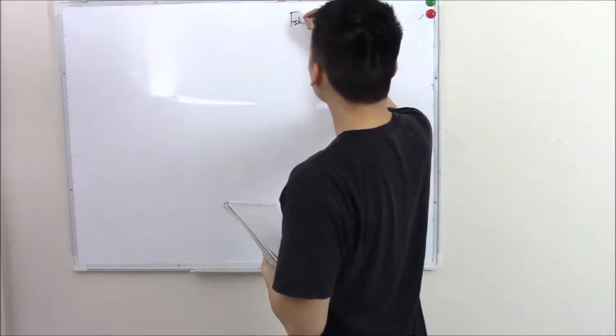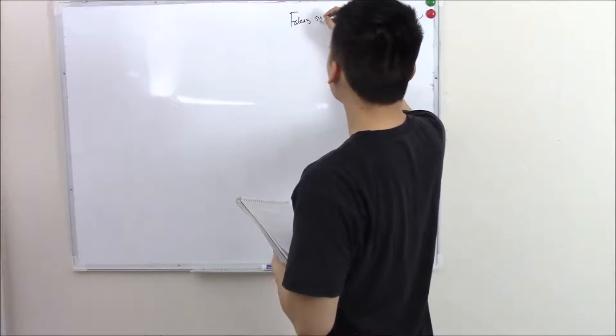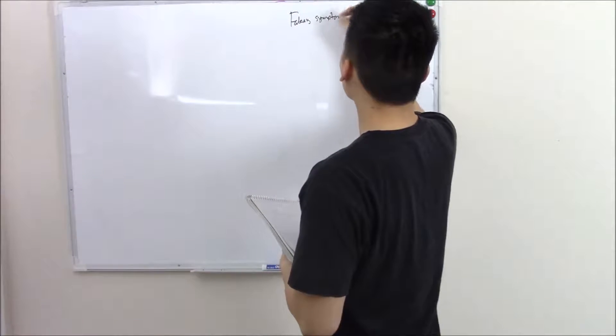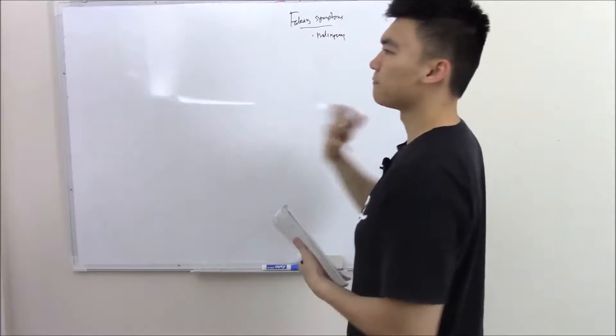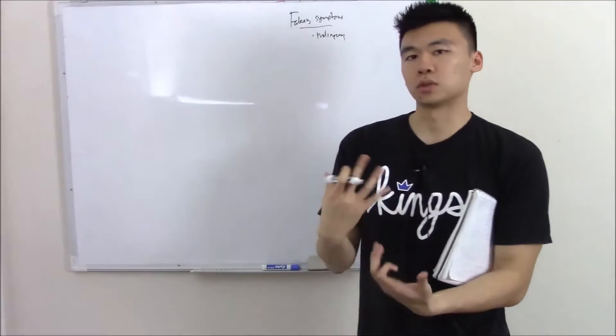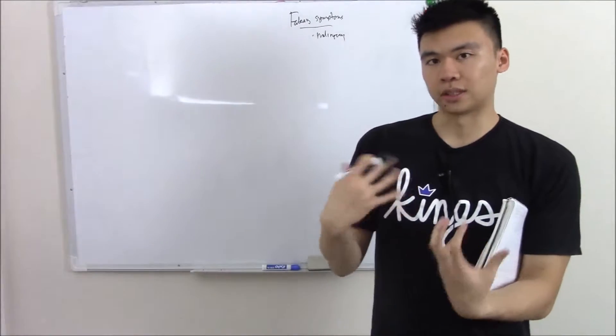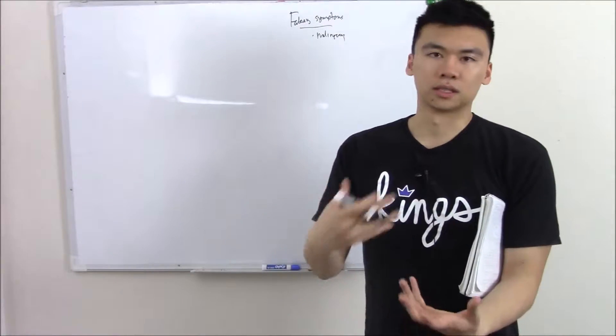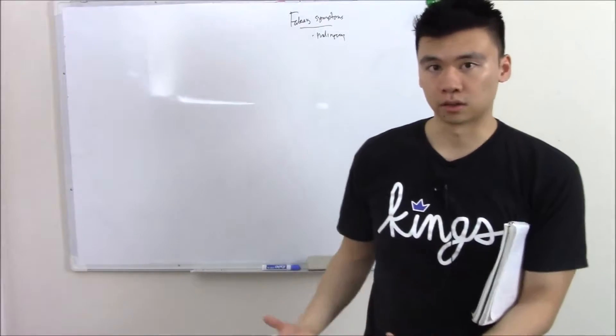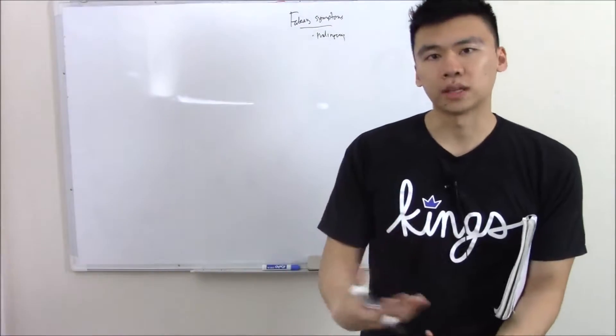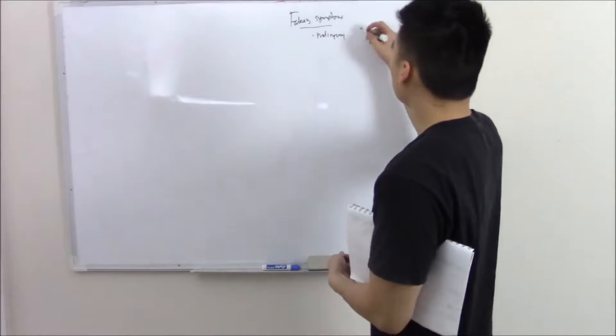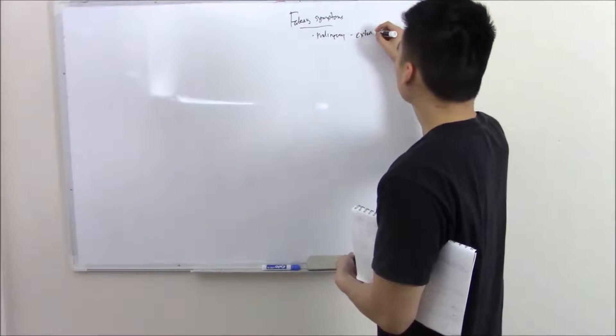So faking symptoms or feigning illness. These include things like malingering. Malingering is faking a symptom or sickness for an external gain. The classic one is workers compensation where someone will pretend they're injured to get workers' comp or someone will pretend they're injured to get opiates. So external gain is the name of the game.